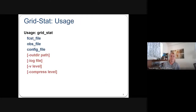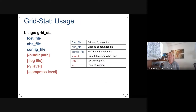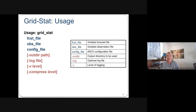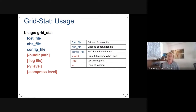To call the tool you type 'grid_stat', pass in the specific forecast file, the observation or analysis file, and the configuration file. You can also specify the output directory and different levels of logging to see what's going on in the tool.